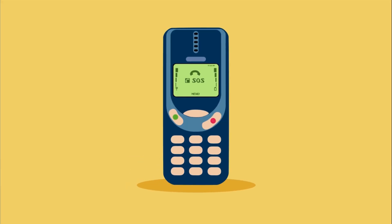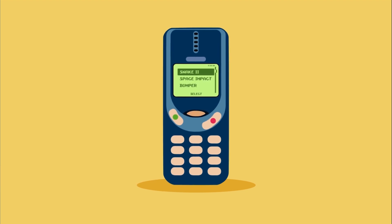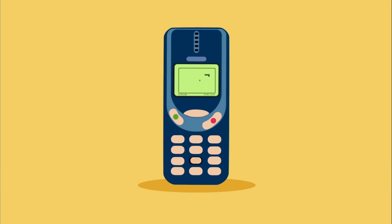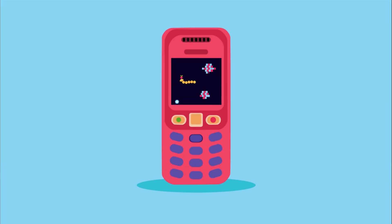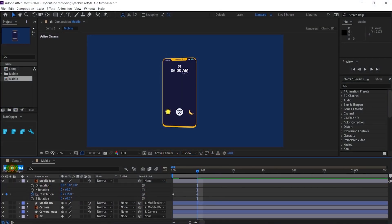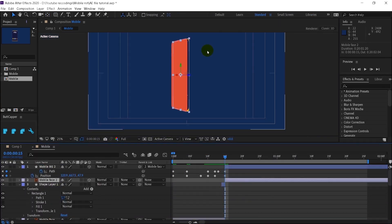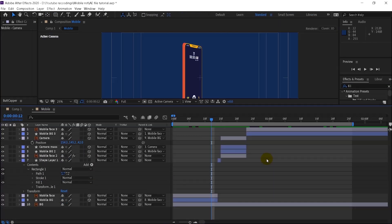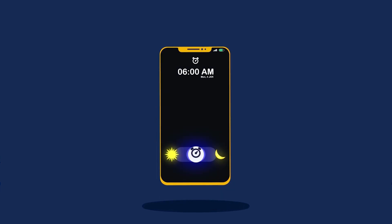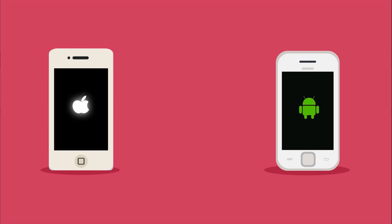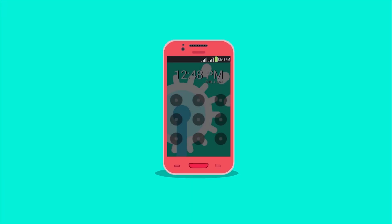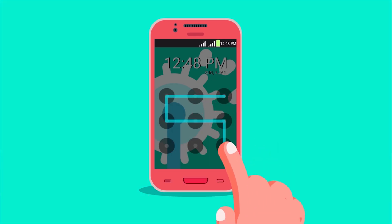A few weeks back I posted this particular animation on the evolution of mobile phones, and a few of you requested me to show the techniques I used in this animation. I have already posted a lesson on how to animate the 3D rotation used in that animation, and in this lesson I am going to show you how to animate transformation animation.